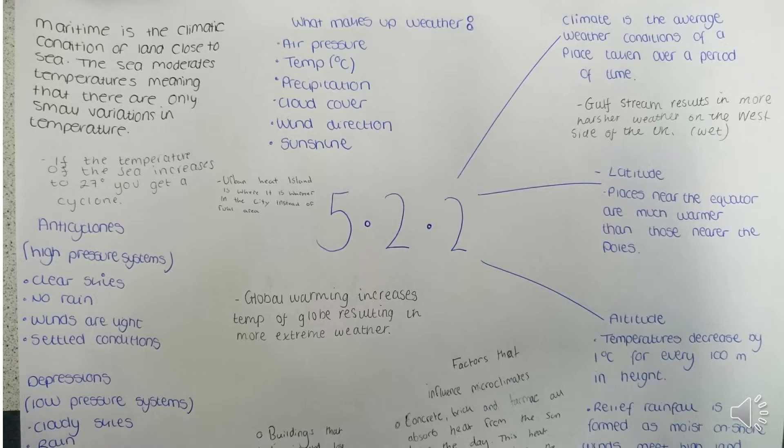Ocean currents also have a big effect on temperature in the United Kingdom. The west coast is warmer and wetter as a result of the Gulf Stream, sometimes called the North Atlantic Drift. The east coast isn't influenced by this, so it's slightly drier in the east. In winter, the east coast of Great Britain is colder than the west coast.